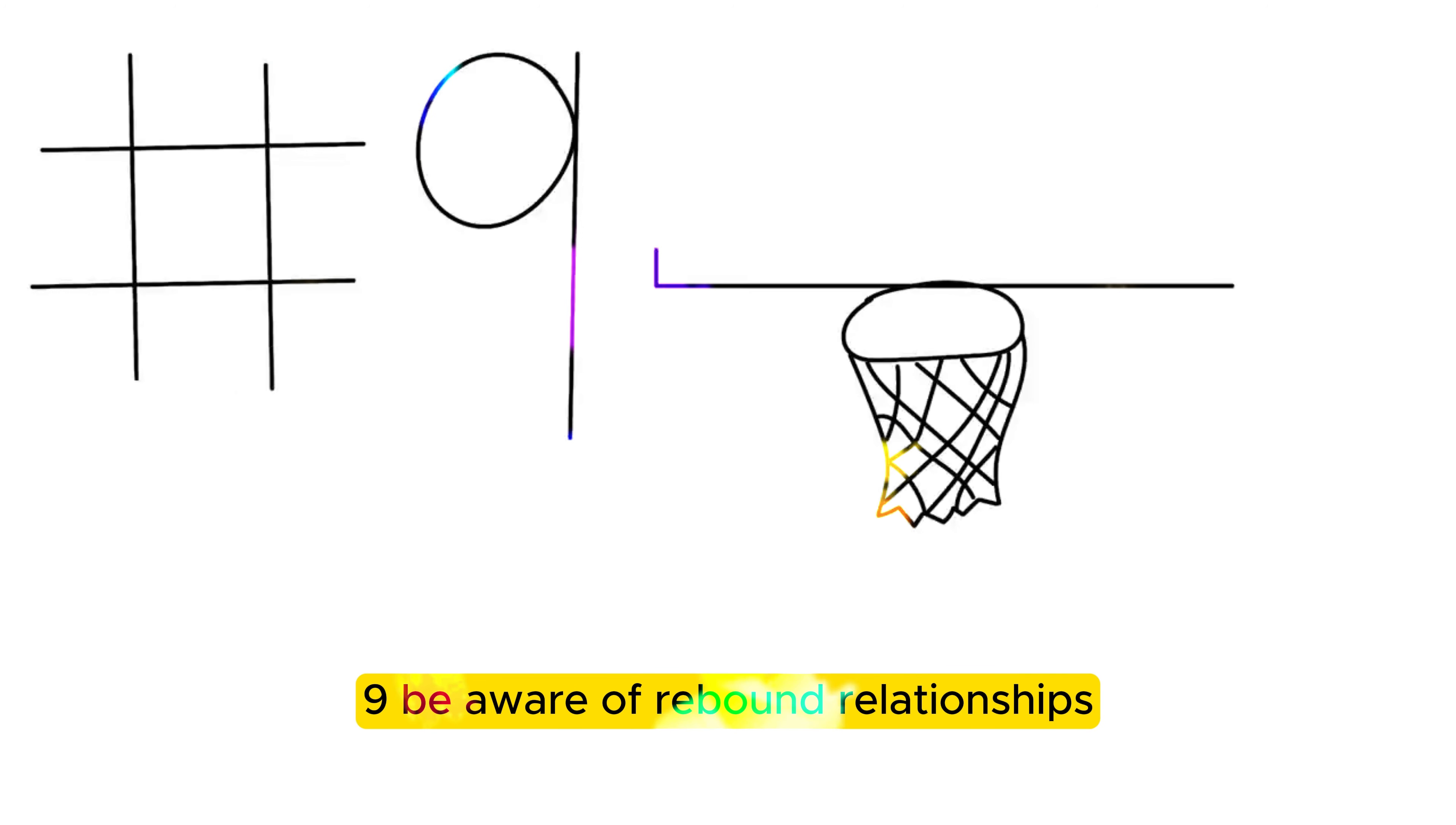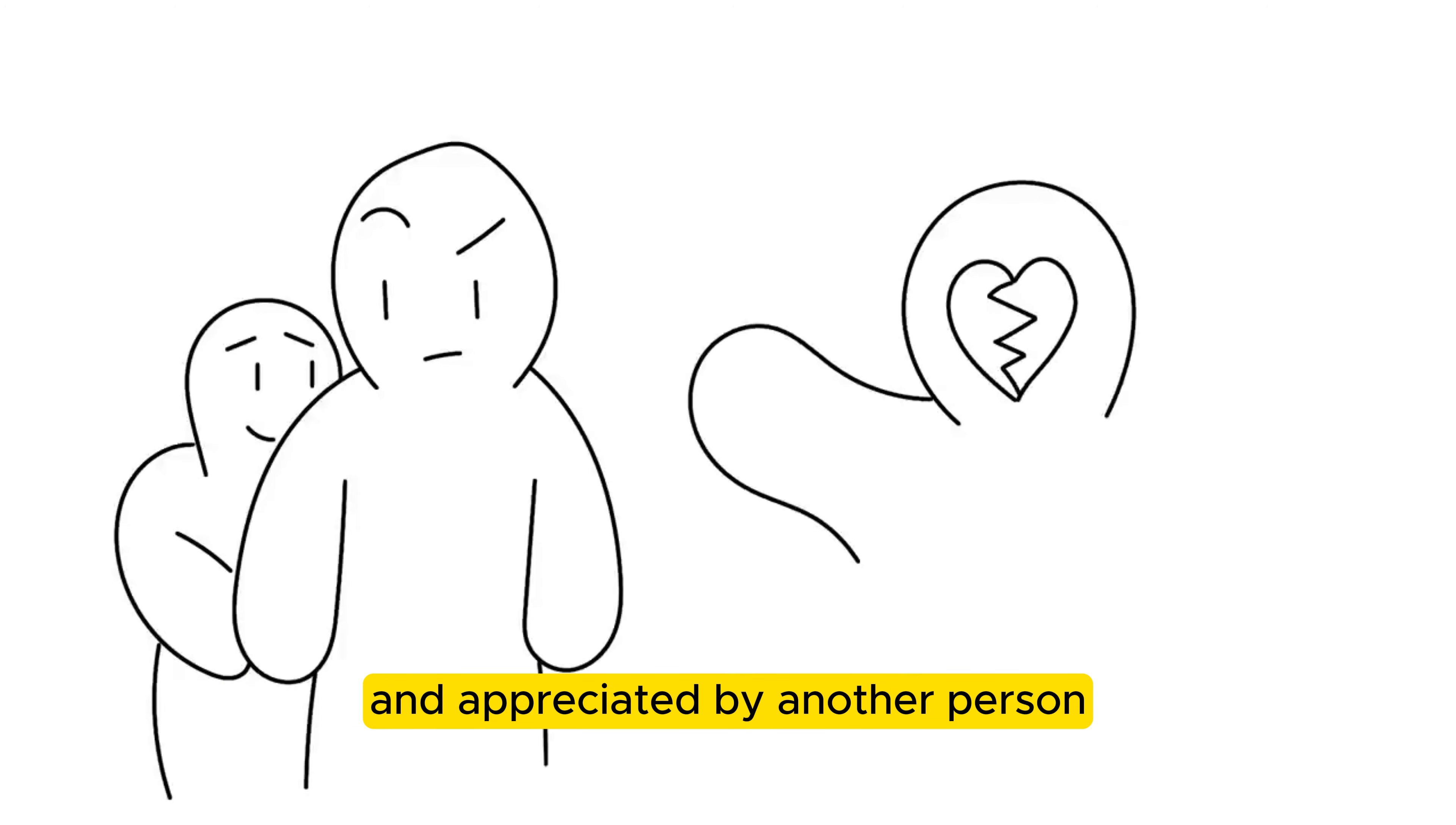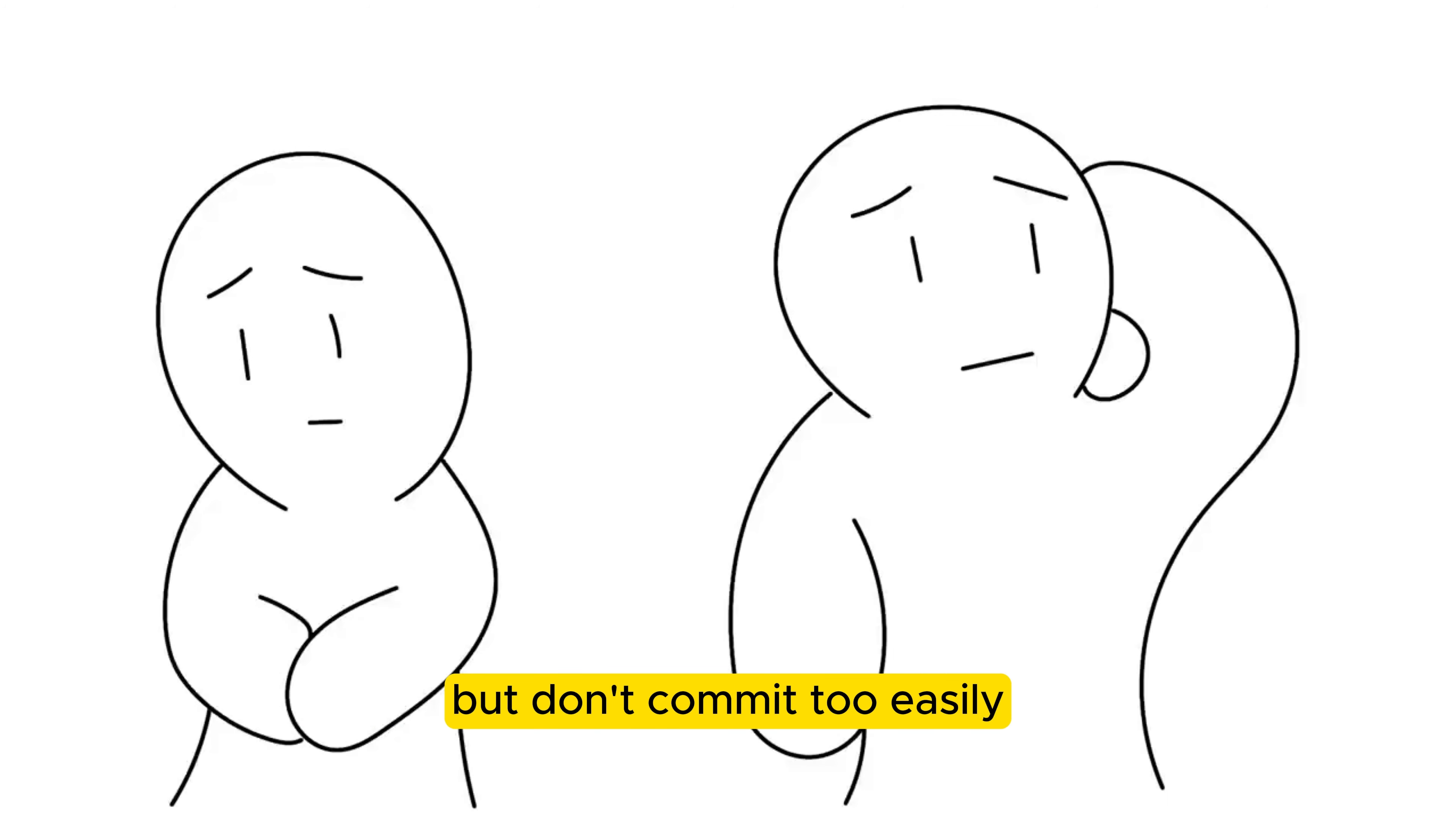9. Be aware of rebound relationships. Rebound simply doesn't work most of the time. For some people, jumping in on another relationship just shortly after a breakup is simply a way of masking the negative emotions. It may sound nice to be embraced and appreciated by another person, but ultimately, when the relationship fails, the amount of negative emotions you have to deal with will double. It is important to settle things first and remain single to reflect on yourself and the relationship before jumping in on an unsteady relationship. Have fun and mingle, but don't commit too easily.